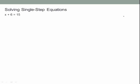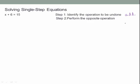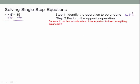To solve a single-step equation like x plus 6 equals 15: the first step is to identify the operation to be undone — that's addition. So we perform the opposite operation and subtract 6 from both sides. The 6's cancel, leaving x, and 15 minus 6 is 9. So x equals 9.